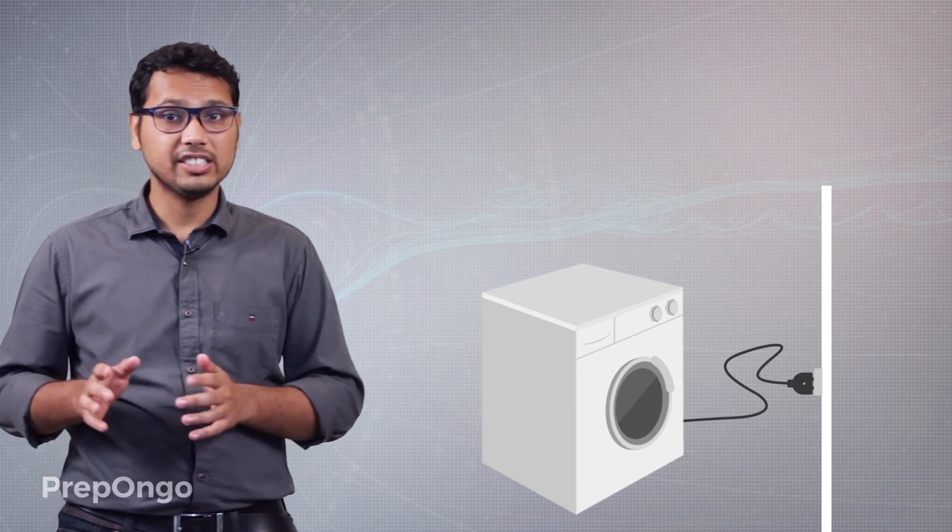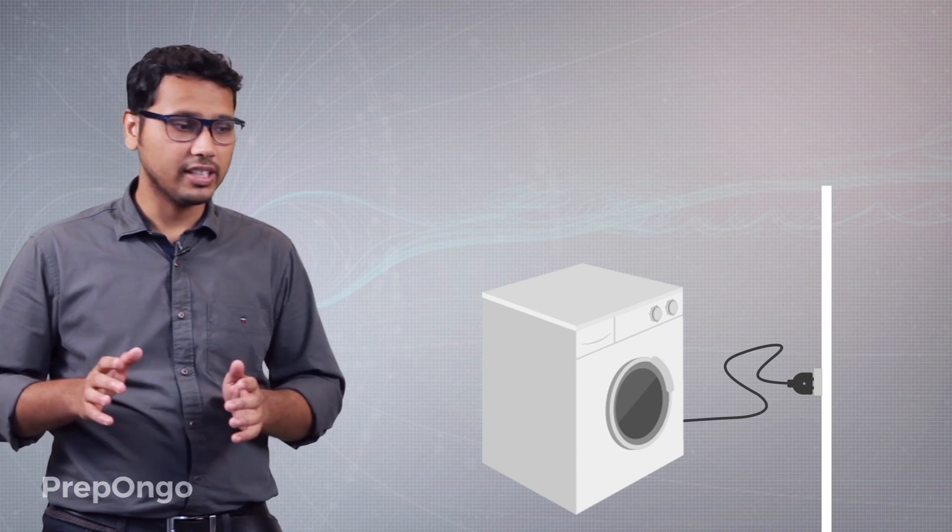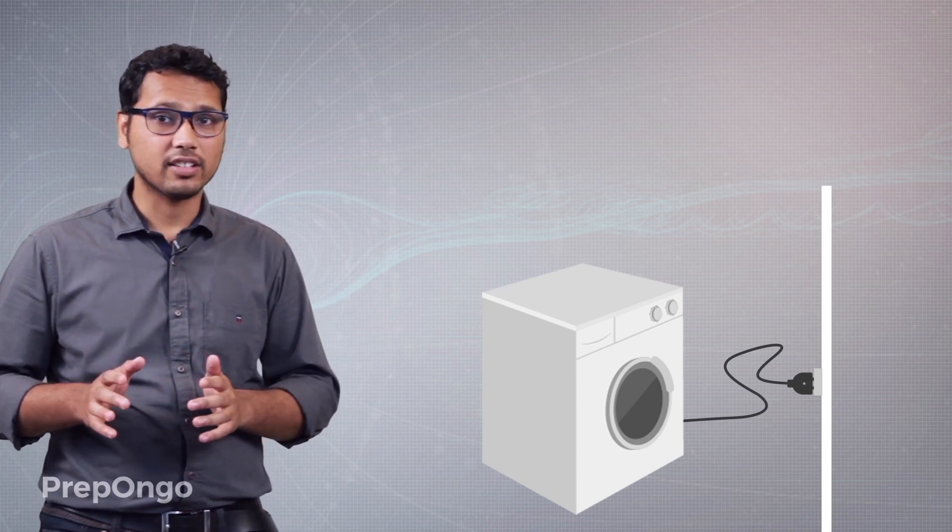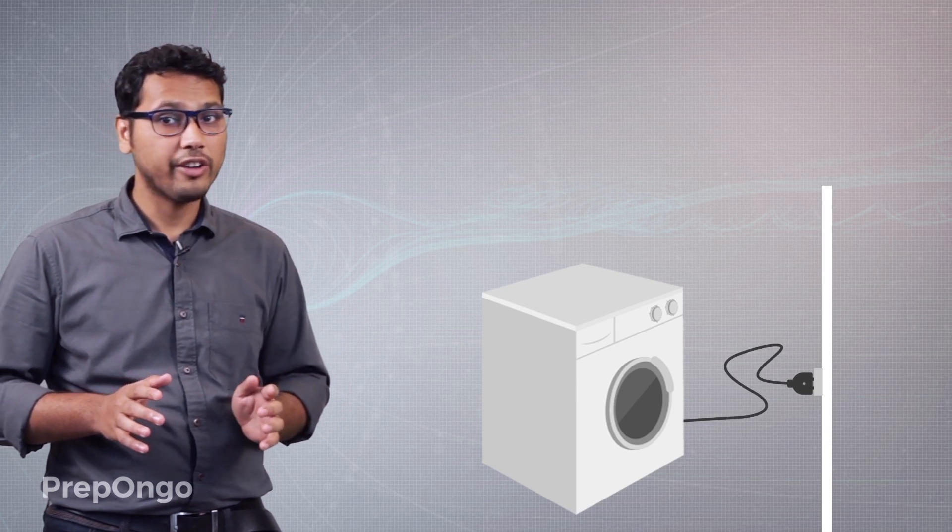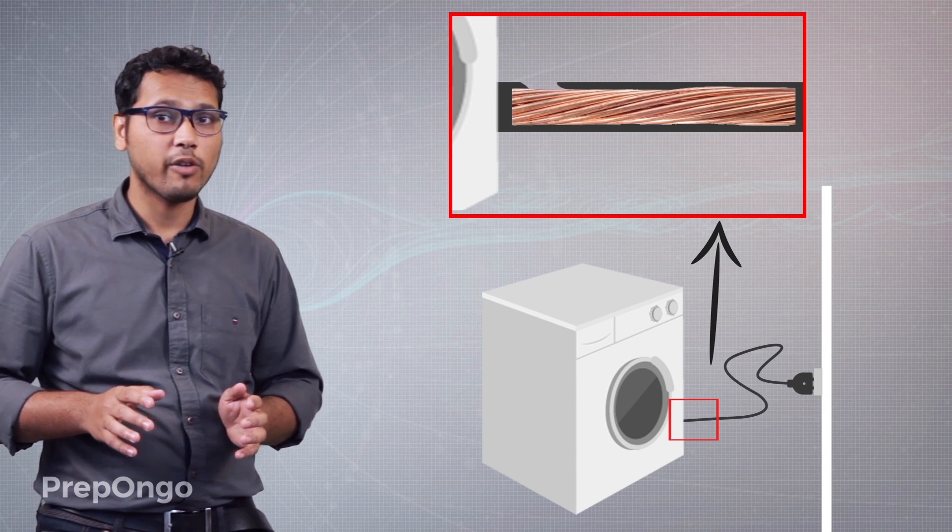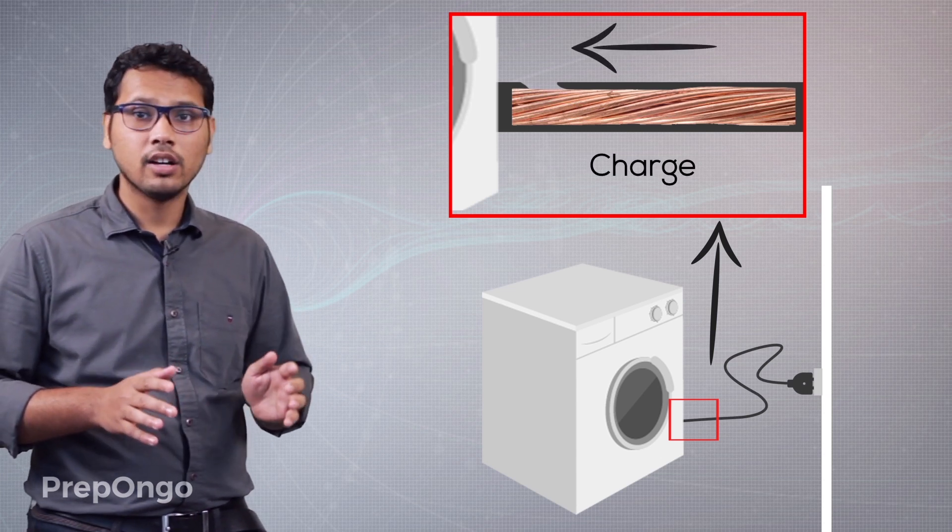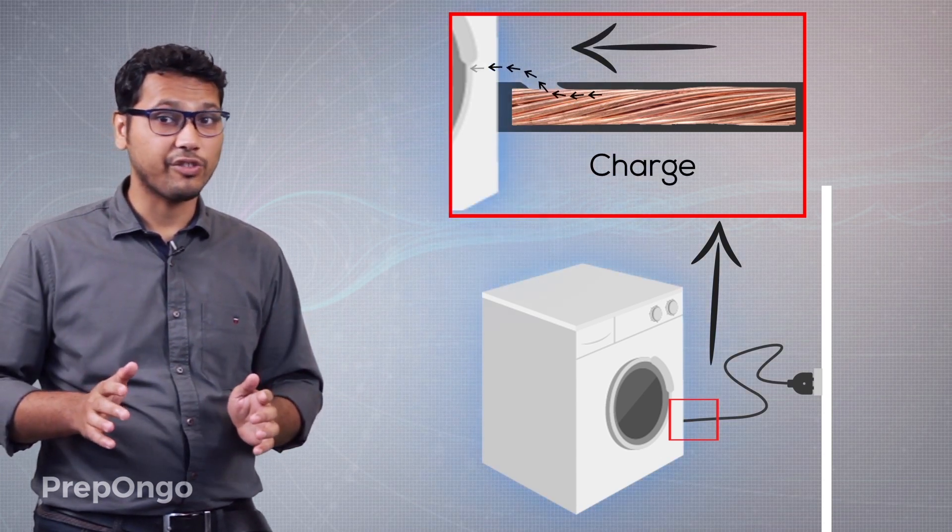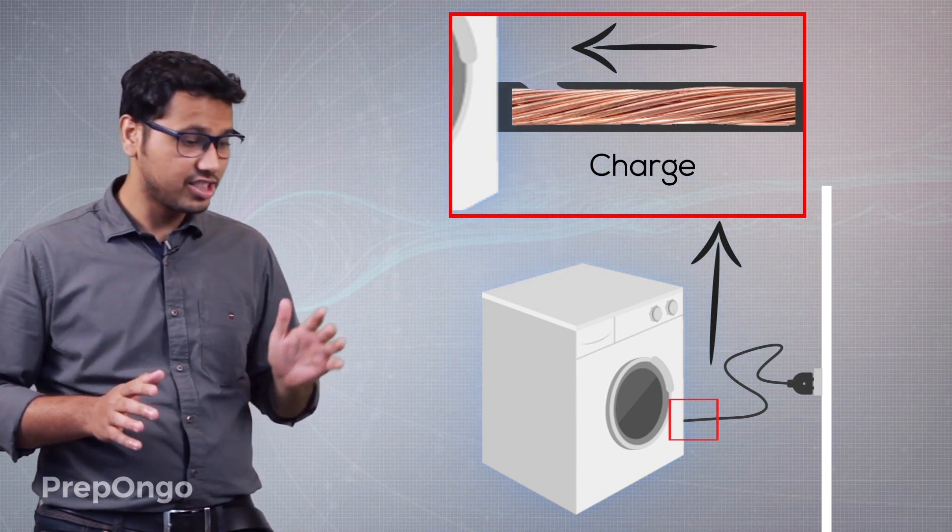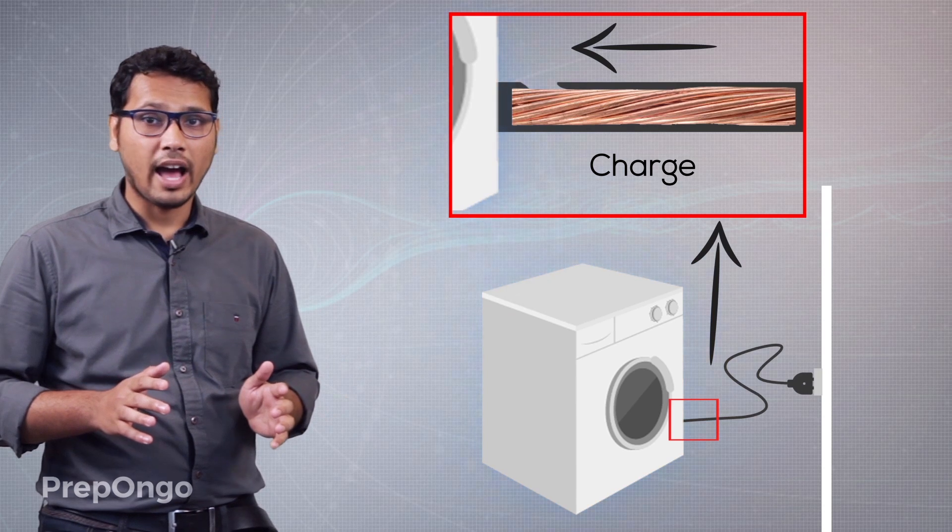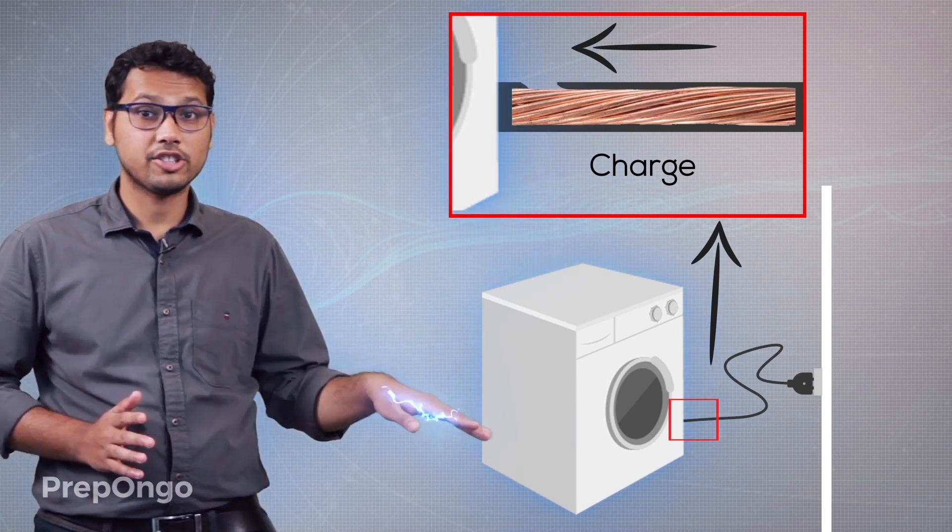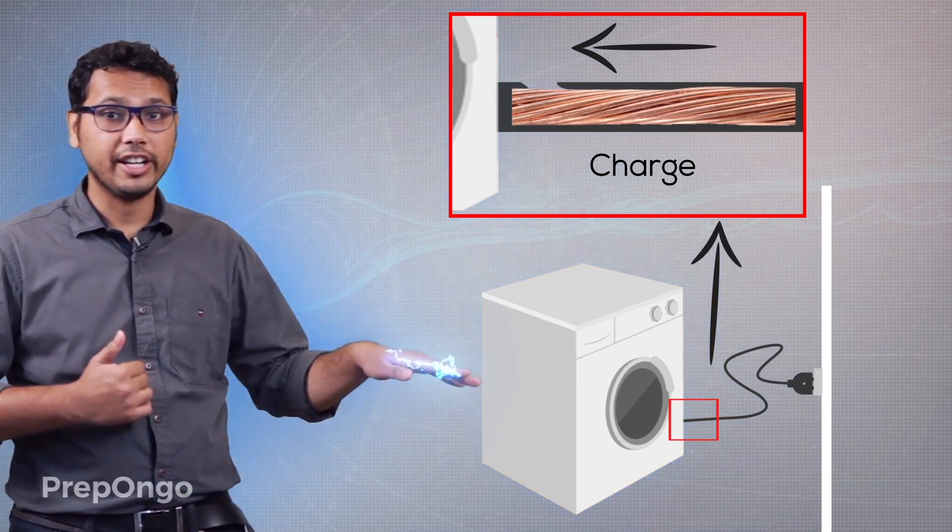There is a reason behind that. What happens is this machine has live wire connecting through it. So if some wear and tear happens on that live wire, some of the charge gets leaked out on the metallic surface of that appliance. So the charge gets stored and when you touch it, the moment you touch it the charge flows through your body into the earth.